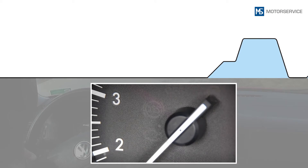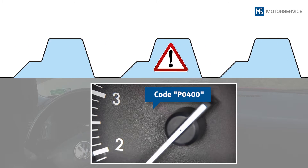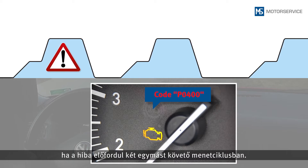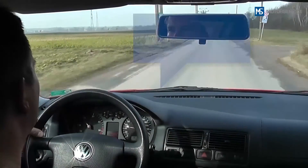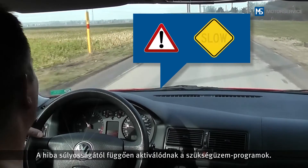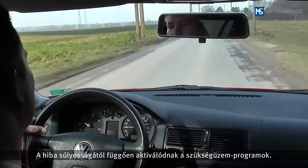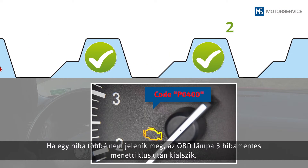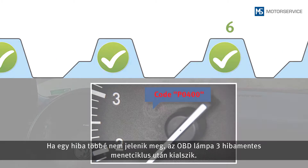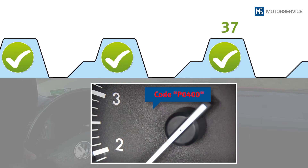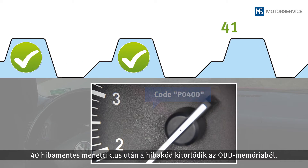Only if an error occurs in two consecutive driving cycles will the Diagnostic Trouble Code, or DTC, be saved as confirmed, causing the malfunction indicator lamp to light up. Depending on the severity of the error, limp home programs may be activated. If an error does not occur again, the malfunction indicator lamp will go out after three faultless driving cycles. After 40 faultless driving cycles, the DTC is also deleted from the OBD memory.